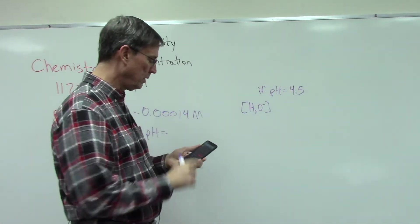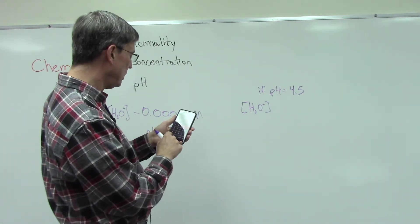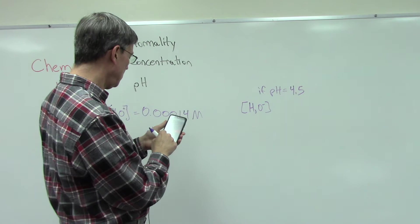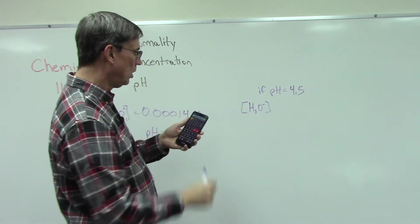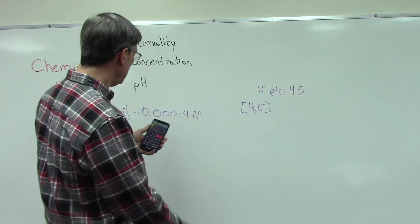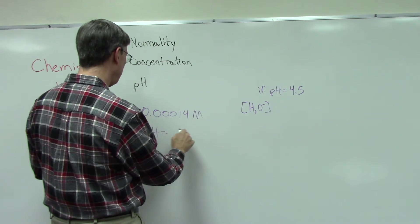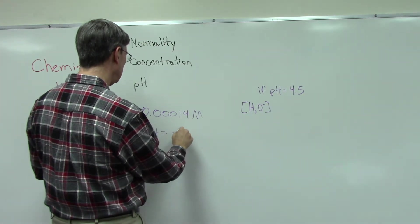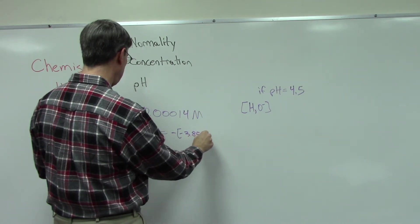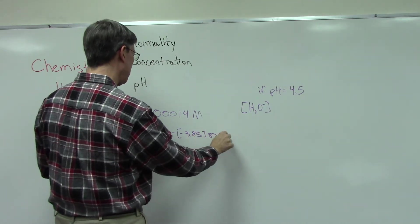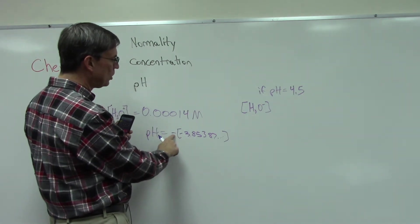What we're going to do is just plug in 0.00014 on our calculator, whatever this is, and then hit log. When you hit log, we get negative 3.85387 and so on. Notice pH is always the opposite of whatever this is.